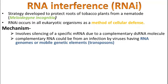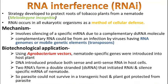These viruses have RNA genomes and can produce complementary RNA. Mobile genetic elements are genetic material that can move within an organism, and are also found in lower organisms like bacteria and viruses. The biotechnological application involves using an Agrobacterium vector.